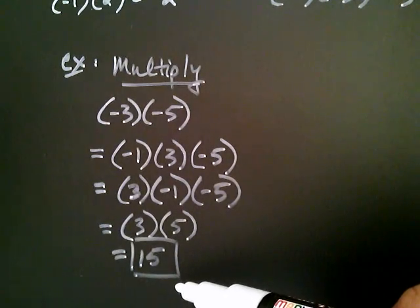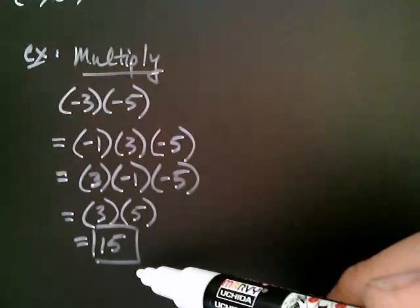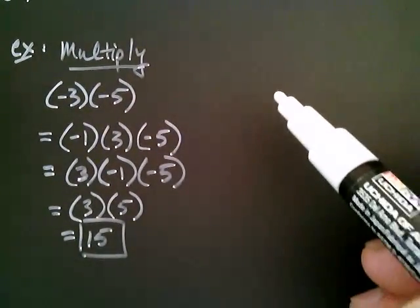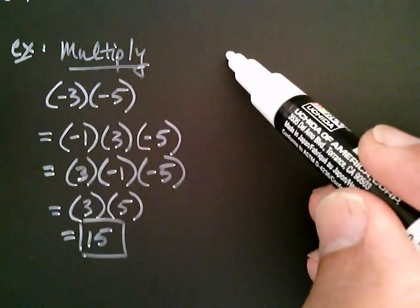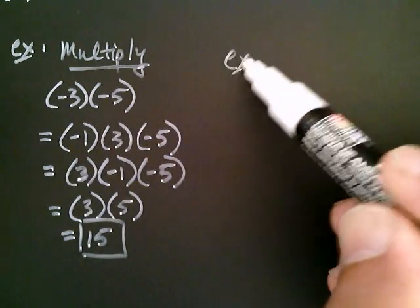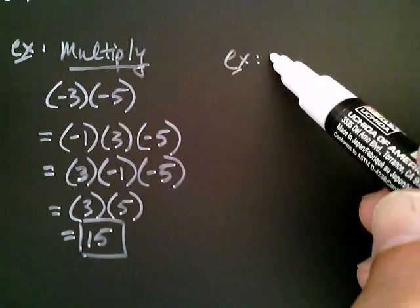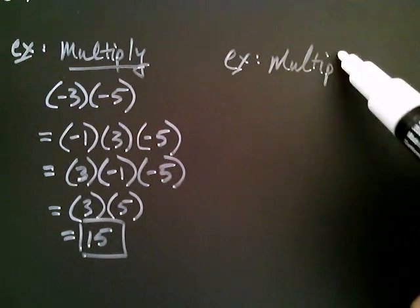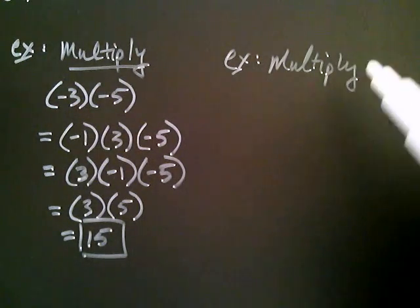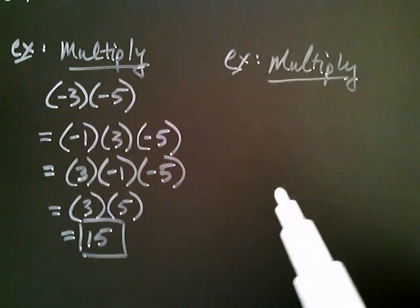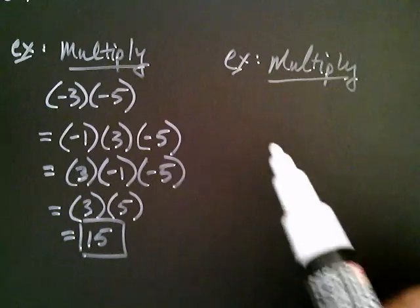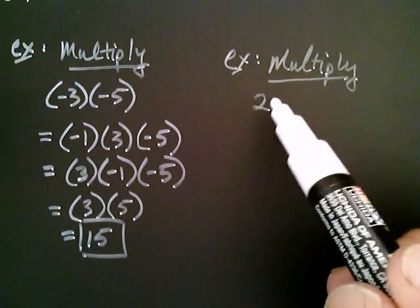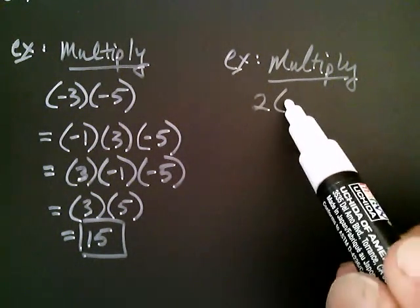We can also use that property to multiply a negative and a positive. For example, let's say we want to multiply two by negative three.